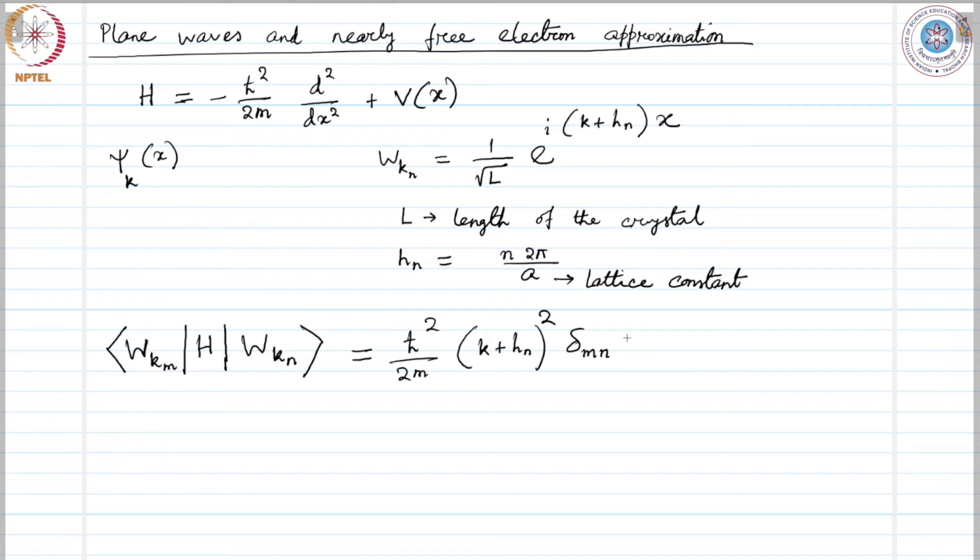Plus 1 over l integration over 0 to l e power minus i h m minus h n times x v of x d x, which may be given as h cross squared over twice m Kronecker delta m n.